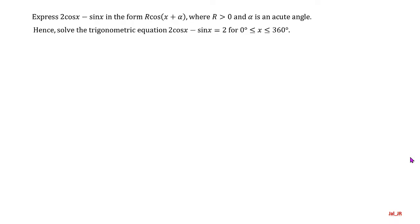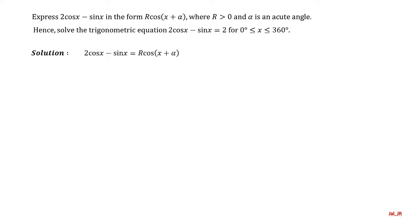Let's look at the example: express 2·cosine(x) − sine(x) in the form r·cosine(x + α), where r is greater than zero and alpha is an acute angle. Hence, solve the trigonometric equation 2·cosine(x) − sine(x) = c for values of x from 0 to 360 degrees.